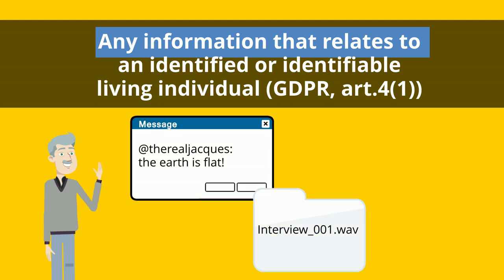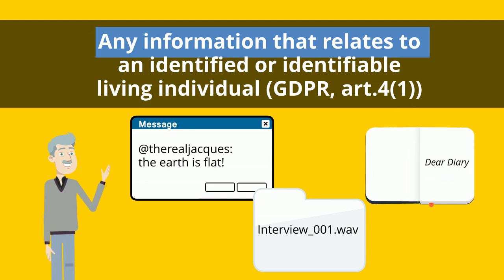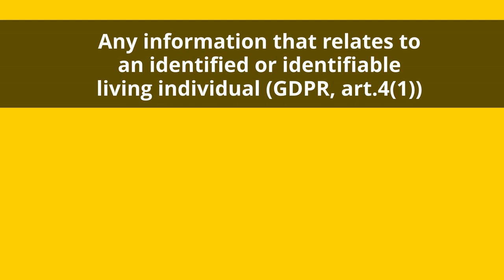Personal data can be about something a person has said, such as in an interview or on social media, but it can also be what someone thinks — for example, in their diary — or what someone owns, like their bank account or property.